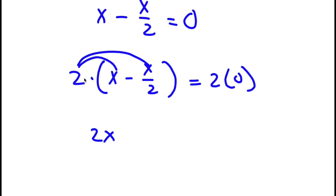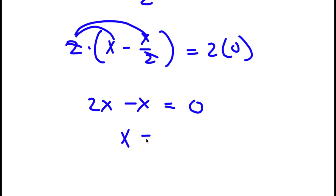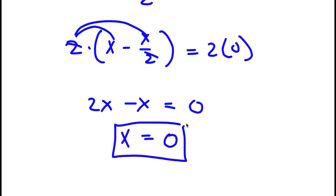And 2 times negative x over 2, the 2 simply cancel out, so all I'll be left with is negative x. And this is equal to 2 times 0, which is simply equal to 0. So I have 2x minus x is equal to 0. Now 2x minus x is simply equal to x. So I have x is equal to 0.